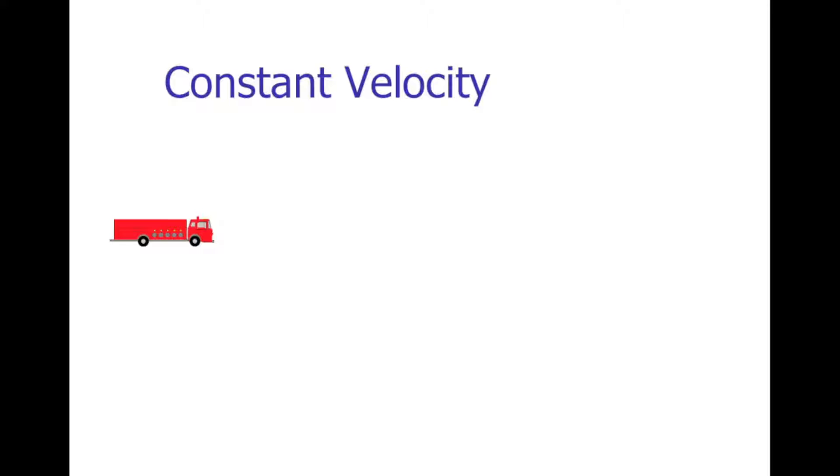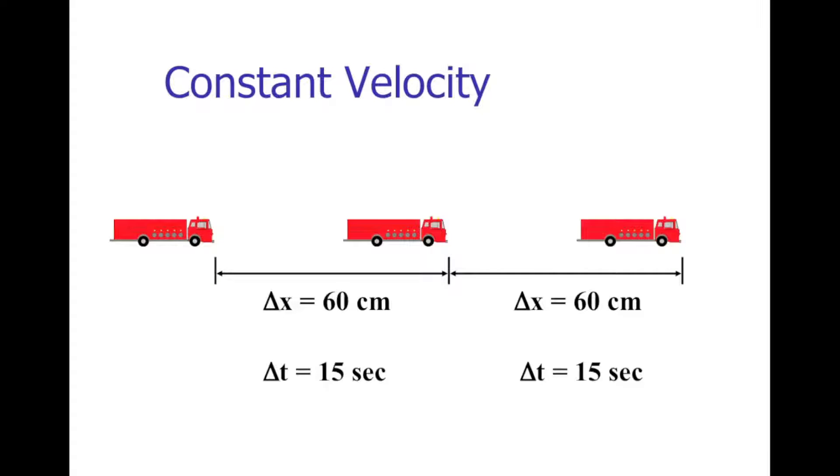Let me describe what I mean by constant velocity. Let's say that I have a toy car, like this fire engine, and it moves forward by 60 centimeters in 15 seconds. If it moves forward again, another 60 centimeters in another 15 seconds, then I know that this has been traveling at constant velocity, and that the constant velocity is 60 centimeters divided by 15 seconds for 4 centimeters per second. That's the constant velocity that it has.